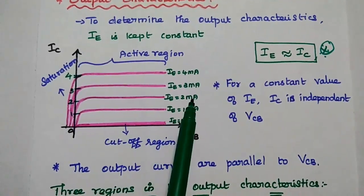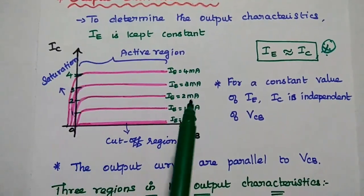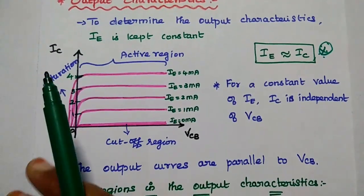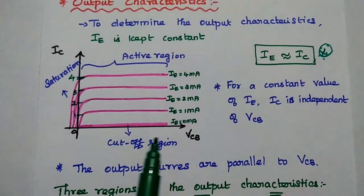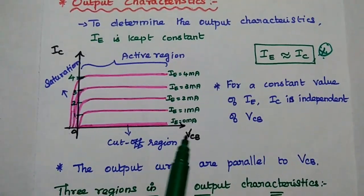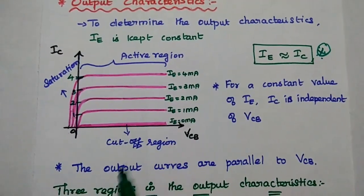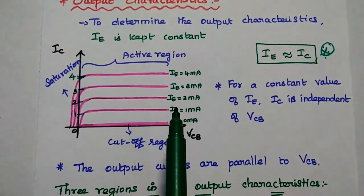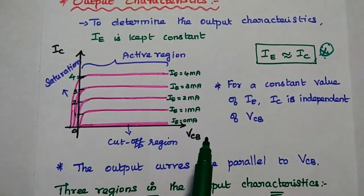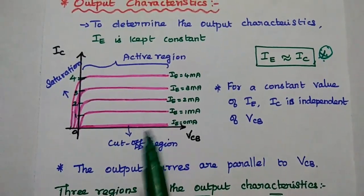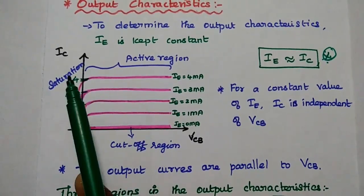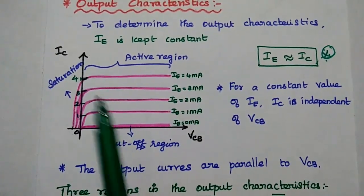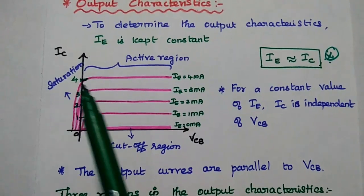For a constant value of emitter current, the output current is independent of the output voltage, so the output curves are parallel to the output voltage axis VCB. There are three regions in the output characteristics: active region, cutoff region, and saturation region. These three regions are very important.